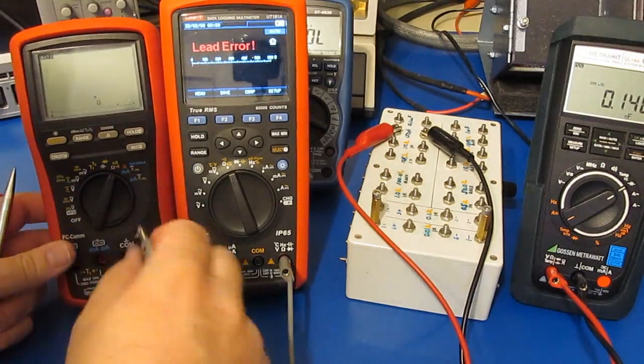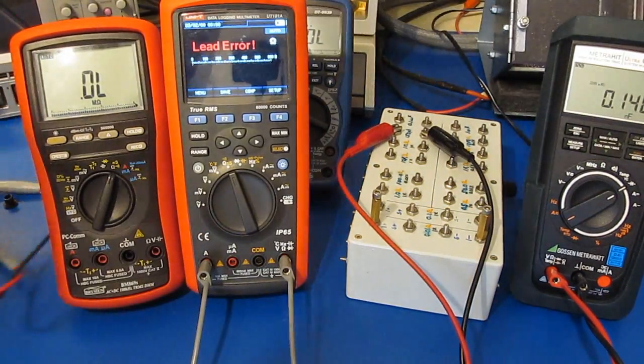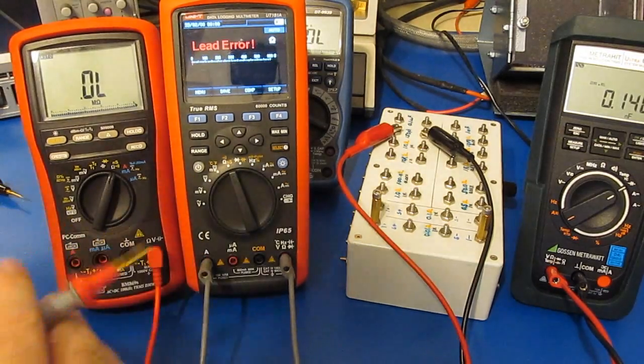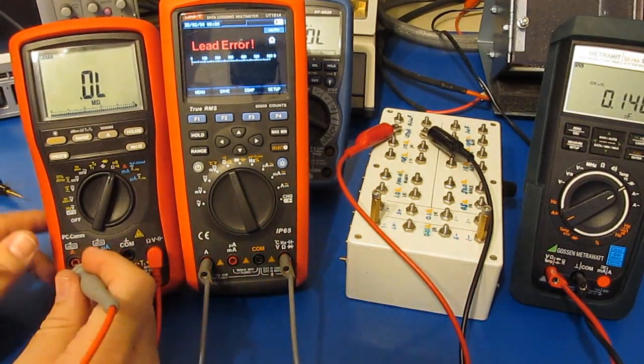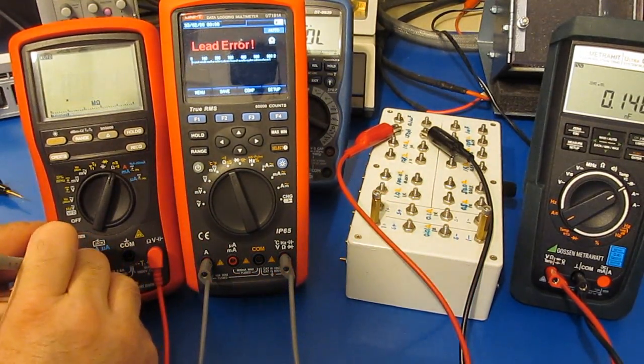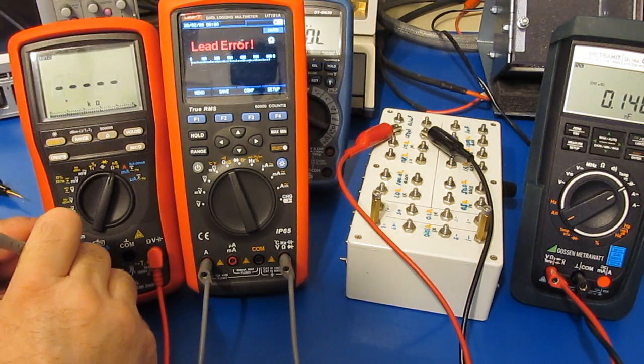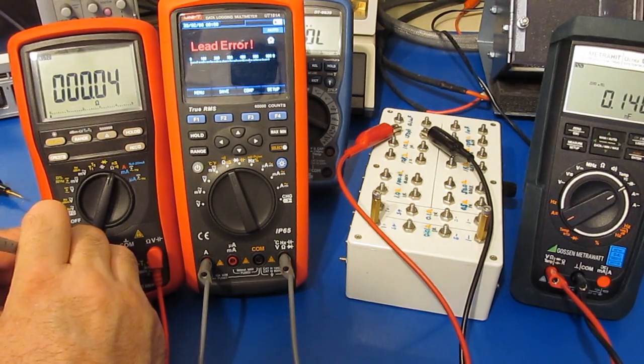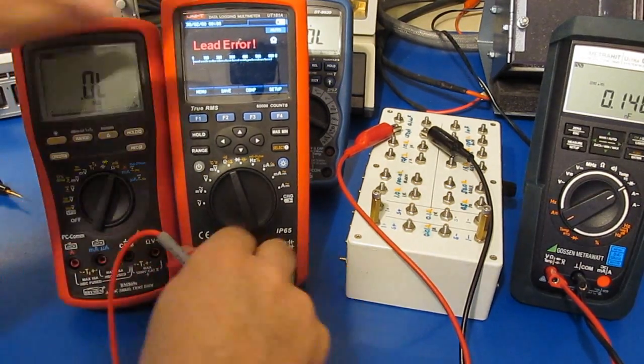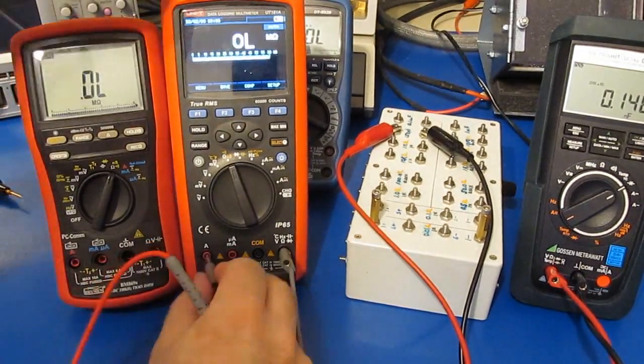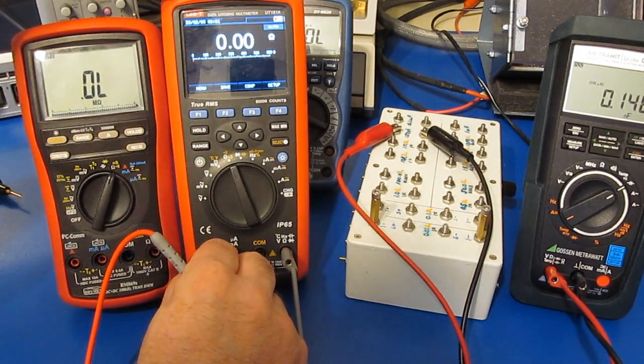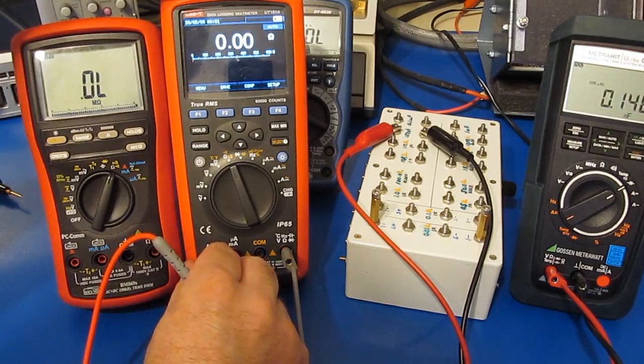But on some meters we can kind of fudge this out. One way to do that would be to use a probe like this that won't actually trip the input. I just have to touch along the side walls and there's our resistance. I can do the same thing with this Unity where I can probably just slightly plug it in right there. So you can see I just haven't fully engaged the jack.